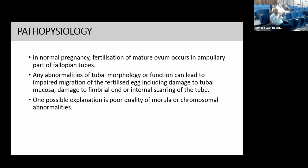It was also observed that ectopic pregnancy occurred when the side on which the tube was patent did not have an ovary, while the ovary was on the other side where the tube was non-functional or had been removed. Even in those cases, ectopic pregnancy was seen in the tube. It was considered that the ovum was picked up by the tube but became a little larger while inside, and that is how it got stuck.